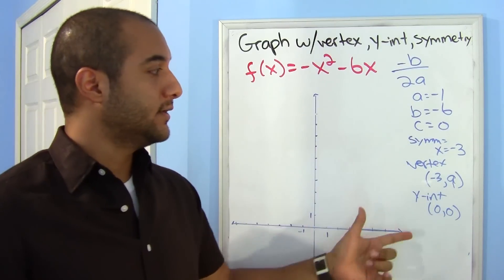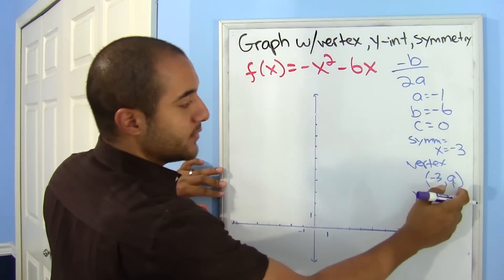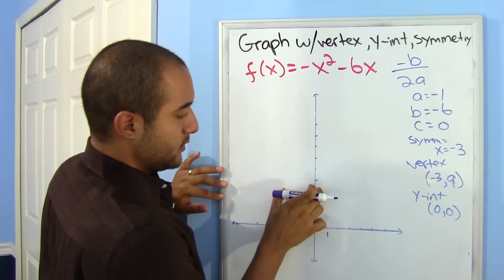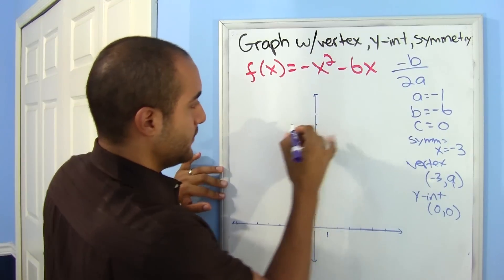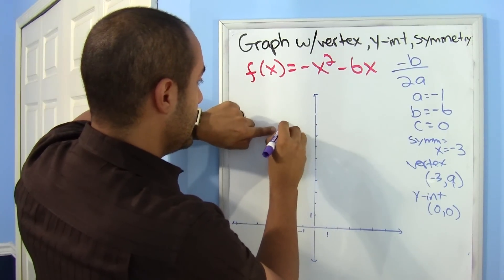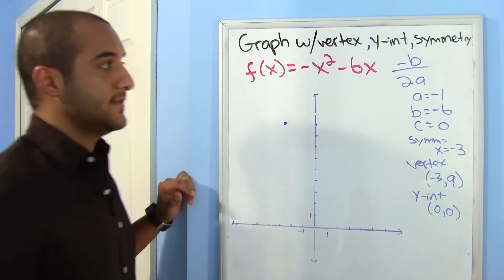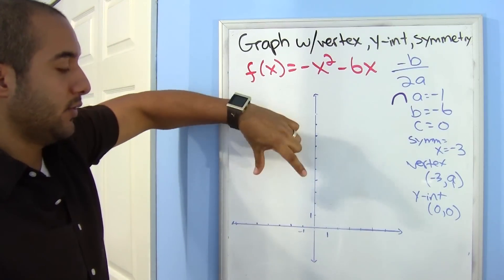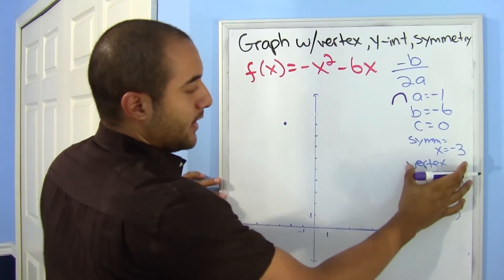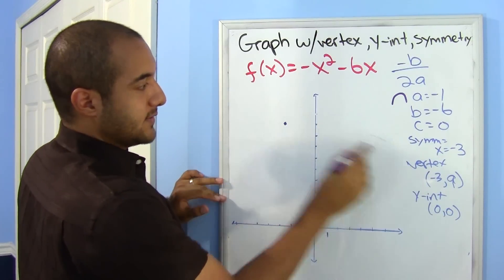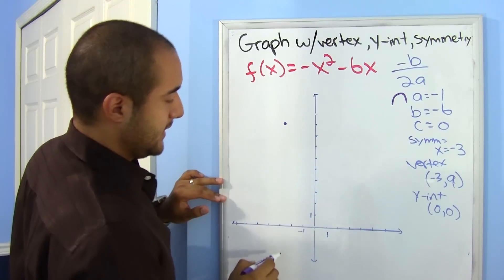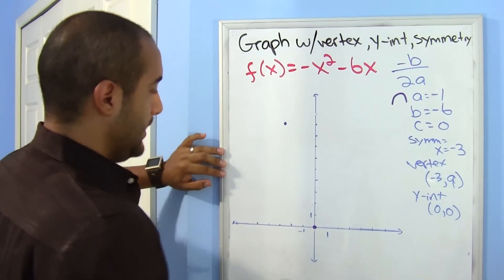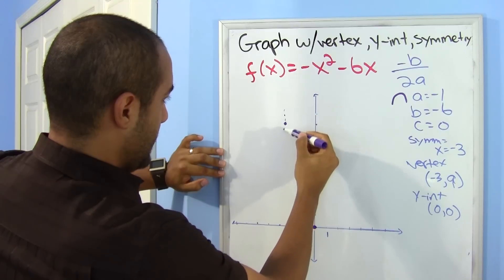Alright, let's use the information we have to go ahead and graph this. We know our vertex is at negative 3, 9. So, negative 1, 2, 3, 9. 1, 2, 3, 4, 5, 6, 7, 8, 9. So, that's over here. That's our vertex. Looking at our a, we see that it's negative. Right? Since it's negative, we know that this is going to open downward. So, we know we're looking for something that's going down. Our axis of symmetry is negative 3, where x is negative 3. So, that's all along this line here, where our vertex is at. Our y-intercept is 0, 0.